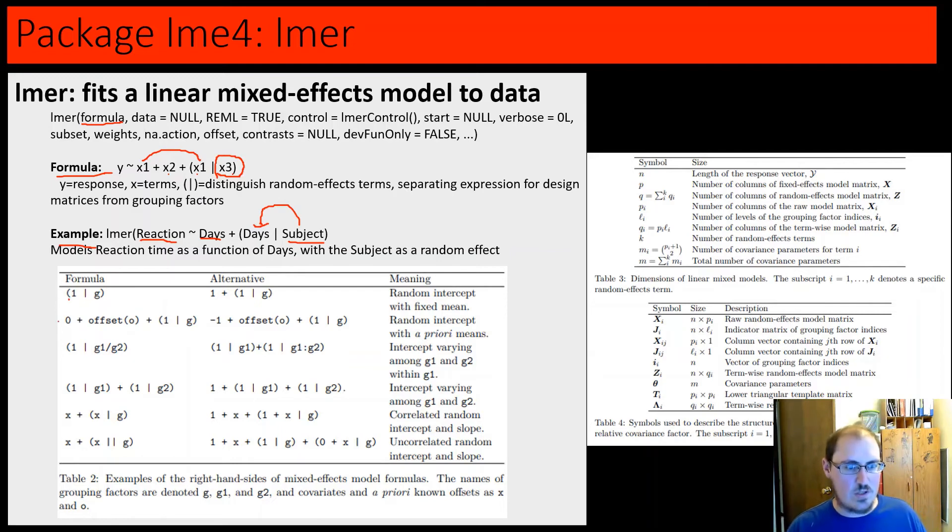there's all sorts of formulas. You can expand upon this simple example to have other sorts of scenarios, such as these two vertical bars lets you specify uncorrelated random intercept and slope. Or you can have crossed or nested random effects, other sorts of things here. So, these kind of formulas can be pretty confusing. I know when I first looked at them, I was overwhelmed. It really helped to see some examples later.